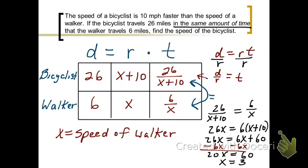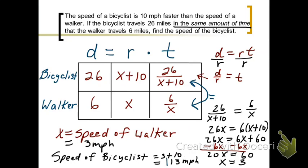So now keep in mind, that's the speed of the walker. We need to find the speed of the bicyclist. So let's see, it's 3 miles per hour for the speed of the walker. So since it's x plus 10 for the bicyclist, speed of the bicyclist is 3 plus 10, which is 13 miles per hour. And that's our answer.